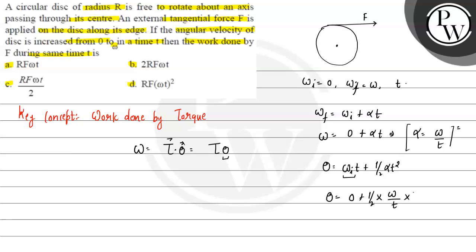Plus half alpha - we calculated alpha as omega by t - times t squared, so we get omega t by 2. This is my theta. I have calculated theta.